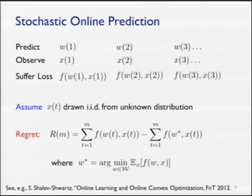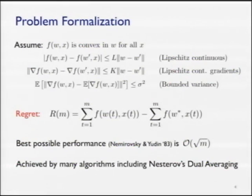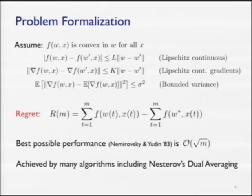There's a nice survey on this by Shai Shalev-Shwartz and others. The assumptions I'll make about the loss function are: it's convex in the prediction parameter W; it's Lipschitz continuous; and it has Lipschitz continuous gradients. The observations X are IID, which gives us that the gradients evaluated at these random observations are unbiased, and we assume they have bounded variance sigma squared — standard assumptions in this literature.